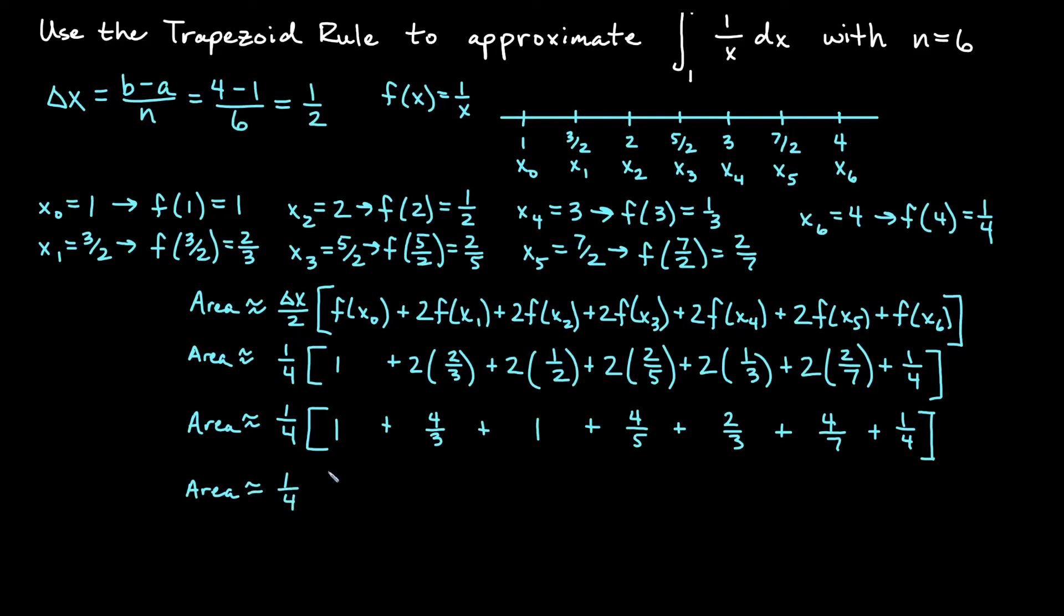And let's combine maybe simply as much as we feel comfortable with on the inside there. So I have 1 fourth. I have 1 plus 1 gives me 2. I have 4 thirds plus 2 thirds. That's 6 thirds. That gives me another 2. Now I have 4 fifths and 4 sevenths and 1 fourth left. Let's say 4 over 5, plus 4 over 7, plus 1 over 4.